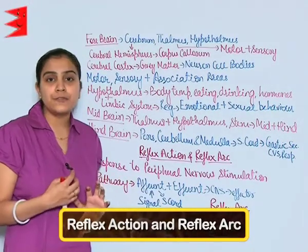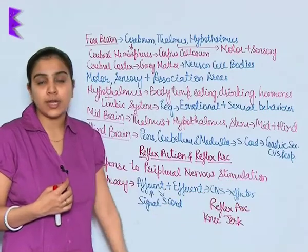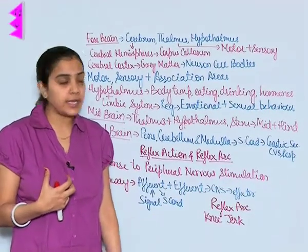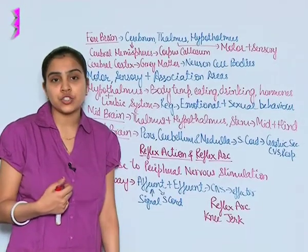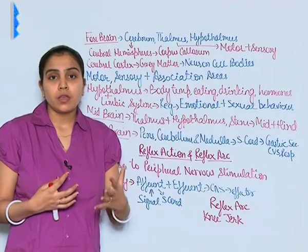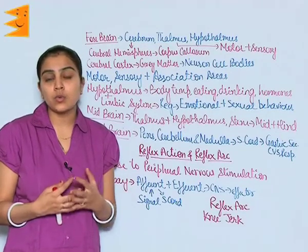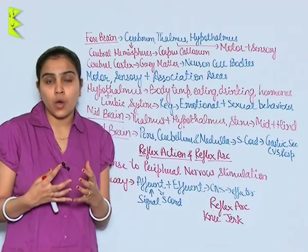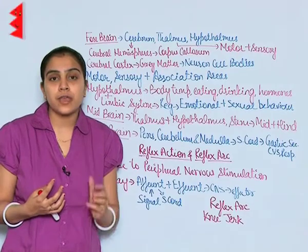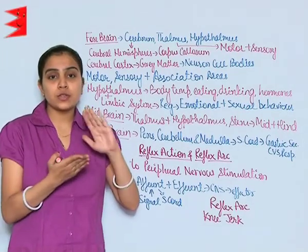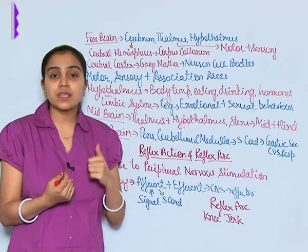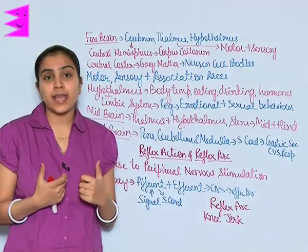A response to peripheral nervous stimulation that does not involve the CNS is known as reflex action. For example, whenever your hand comes close to an object that is extremely hot, extremely cold, or a rough surface, automatically — as soon as you are about to touch the surface — you move your hand away. This is because of reflex action.